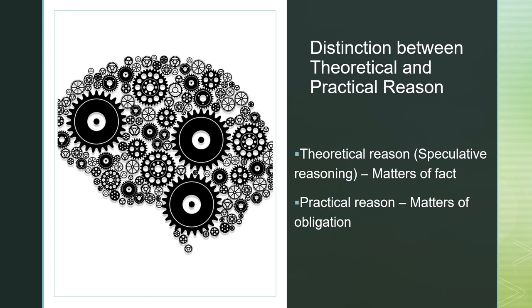In this way, practical reason considers which commitments or projects to choose and how to carry them out. To tell whether a decision or action is practically reasonable, a person must have experience, intelligence and a desire for practical reason. Unlike other ethicists such as utilitarians, Finnis rejects the idea that theoretical reasoning, or 'is' statements about the world, can lead to practical reasoning, or statements about how we should behave. This means that Finnis' natural law is not challenged by the naturalistic fallacy.